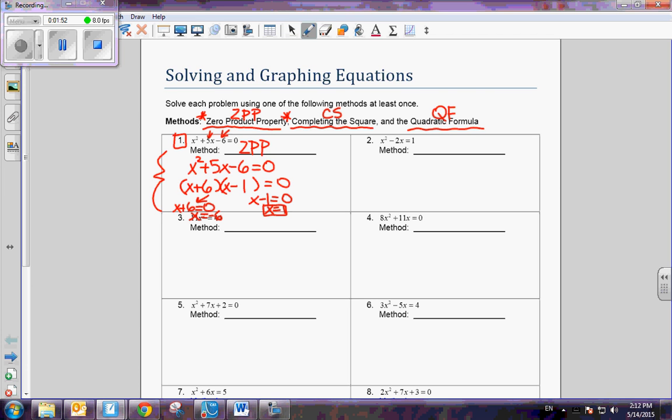Now in number 2, I'm going to demonstrate the completing the square. The reason why I like completing the square for this problem is I notice the coefficient of the x term, we call that b. If we divide that by 2 and add 1, negative 2 divided by 2, such a pretty number. So I'm going to use completing the square. Now, remember, for completing the square, the first step is you have to write it in the form ax squared plus bx equals c. Well, that's already done.